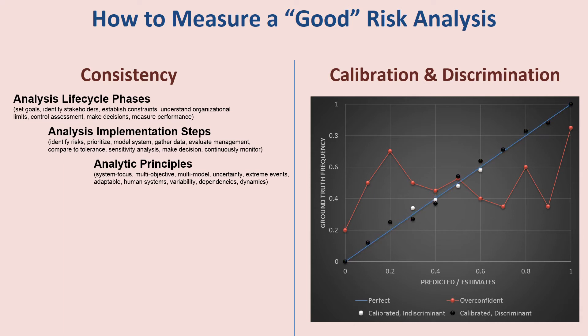The red line illustrates a collection of judgments — say 50 or more — where we've counted how many times each estimated event was actually realized. When they estimate 20% probabilities, about 70% of the time those events actually happen. Whereas when they estimate 60% probability, it only happens about 40% of the time. This individual is overconfident — they believe they have more certainty in events than they should. Their predictions are inconsistent with reality: they are uncalibrated and not very discriminative.